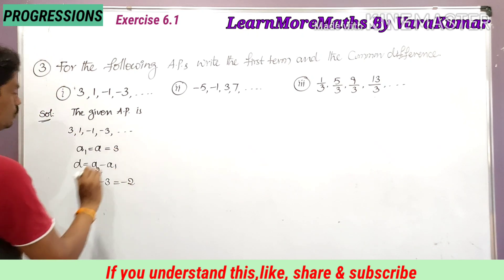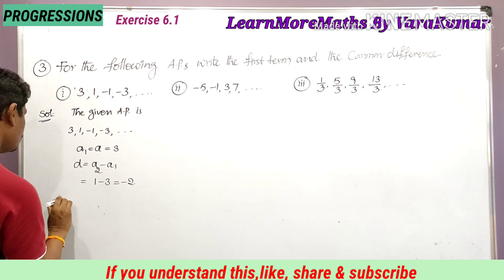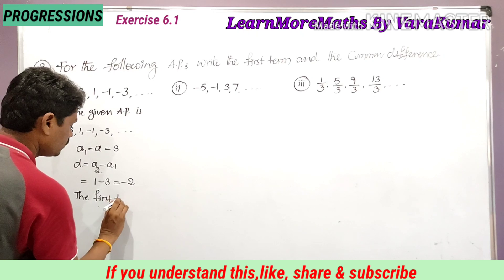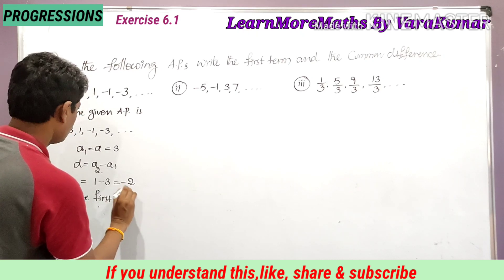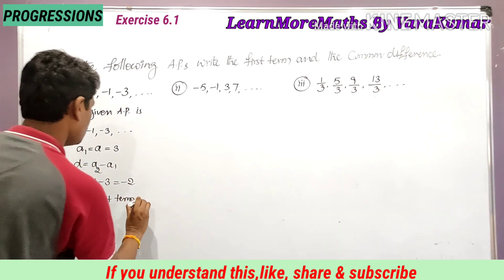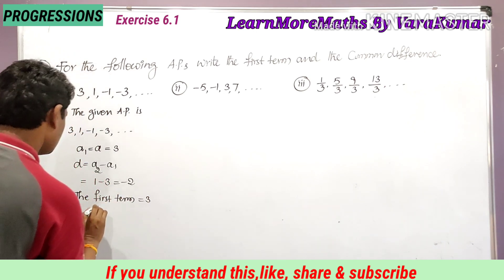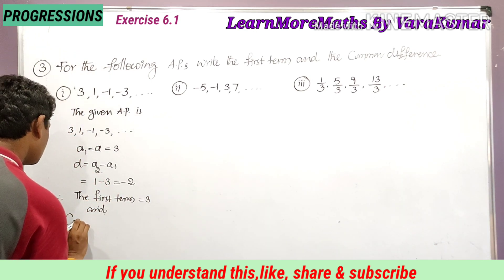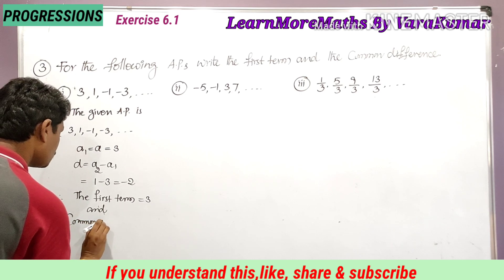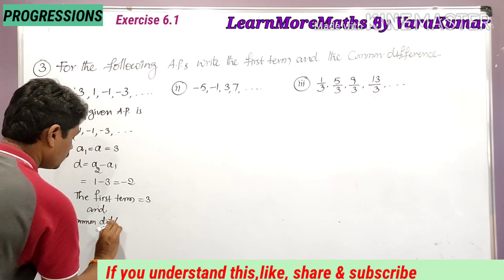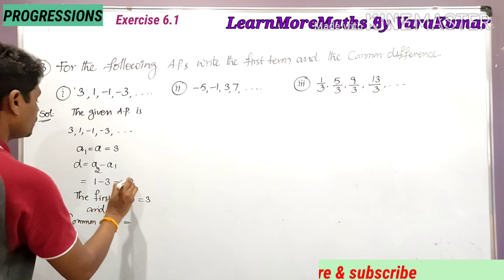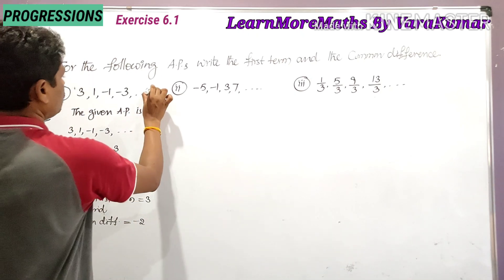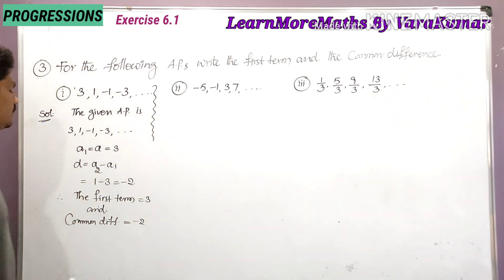Therefore, the first term is equal to 3, and the common difference is equal to -2. Simple — very important and very easy.